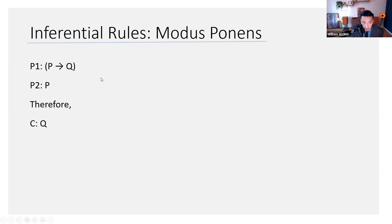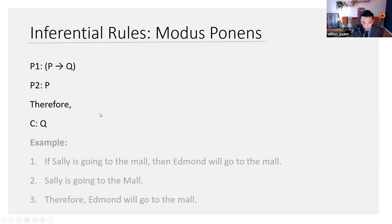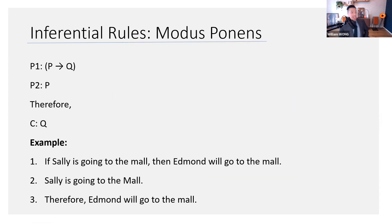Here is another example. P entails Q, P, therefore Q. One more example for you. Logic is often about examples. If Sally is going to the mall, then Edmund will go to the mall. Sally is going to the mall, therefore Edmund will go to the mall. Easy.